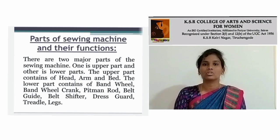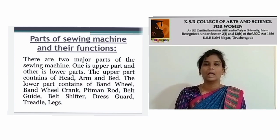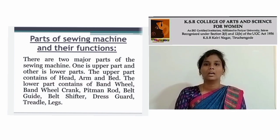There are two major parts of the sewing machine. The one is the upper part and the other one is the lower part. The upper part consists of the head, palm, and bend. The lower part consists of the bed, wheel, crank, and big man.